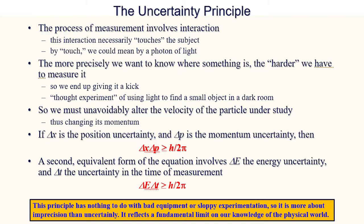So, unavoidably, we alter the velocity of the particle under study. The uncertainty principle in physics says that the product of the position uncertainty and the momentum uncertainty, which involves the motion, is a very small number. In other words, this uncertainty doesn't appear in the everyday world, but it's dominant at microscopic scales of atoms. There's a second equivalent form of the equation involving the uncertainty in the energy we might measure for something, and the time at which we measure it. In other words, we cannot know both position and momentum, or speed, with infinite precision. Nor can we know energy and the time of measurement with infinite precision. There's a flaw on our ability to understand nature. It's important to realize that the uncertainty principle has got nothing to do with bad equipment or apparatus or sloppy experimenters or scientists. It's more about imprecision than uncertainty. It is a truly fundamental limit on our knowledge of the physical world.